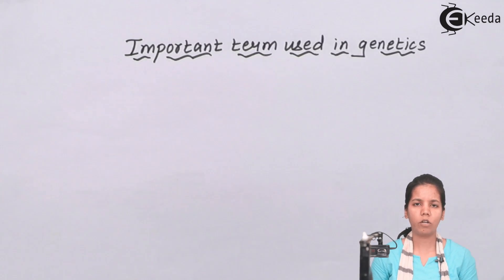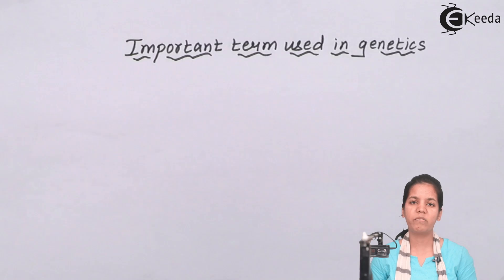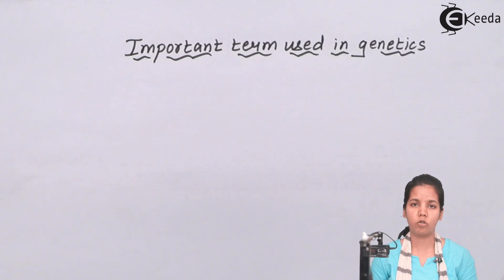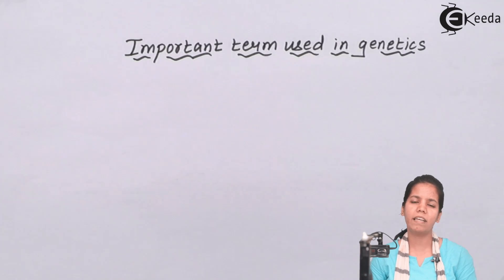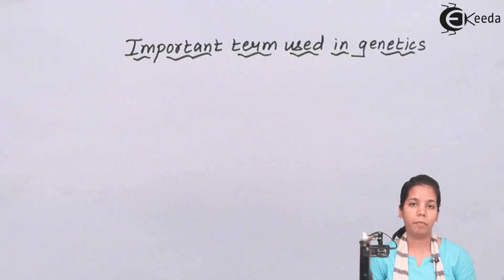Firstly, let's talk about phenotype. When I say phenotype, the English meaning could be physical appearance. For example, if I see a mango tree, I can say that the phenotype of the mango tree is tall. In biology, phenotype is nothing but the external appearances of an organism.